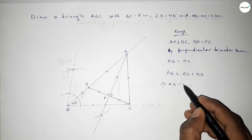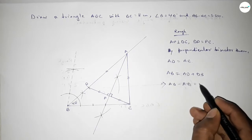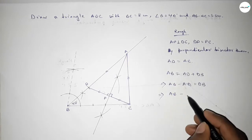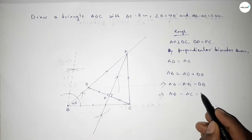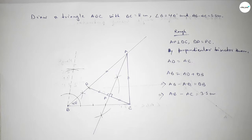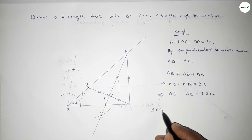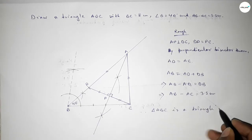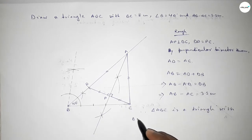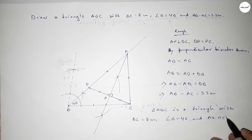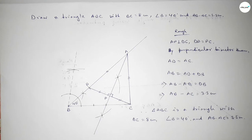Now we can write AB equals AD plus BD. So AB minus AD equals BD, which implies AB minus AC equals BD equals 3.5 centimeters. That's the proof. Therefore, triangle ABC is the required triangle with BC equal to 8 centimeters, angle B equal to 40 degrees, and AB minus AC equal to 3.5 centimeters. Thanks for watching — if this video is helpful, please share it with your friends.